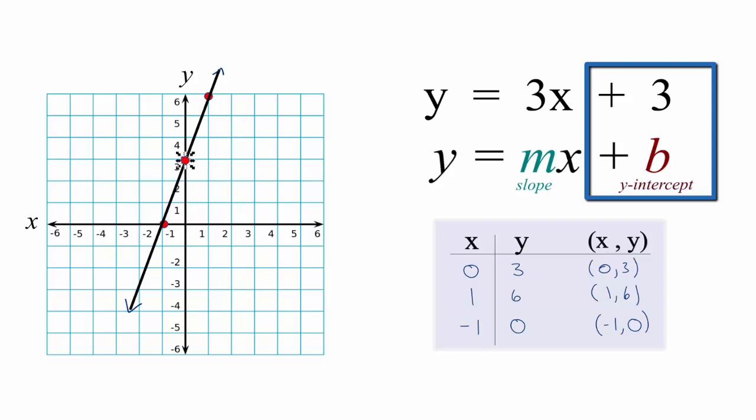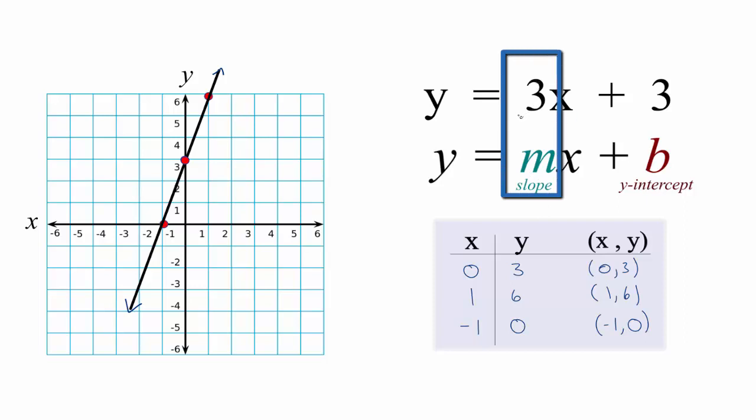For the slope m, we have 3, and really 3 we can write as 3 over 1 - it's the same thing. So the 3, that's the rise, and the 1, that's the run. So we'll go up from our y-intercept 1, 2, 3 and over 1, and it's right here on the line.